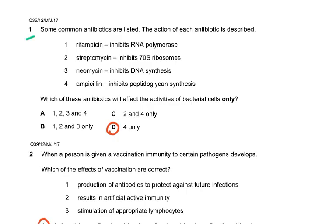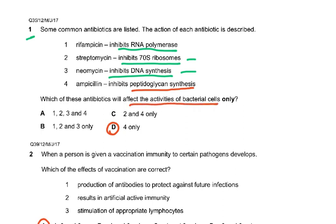Question one: some common antibiotics are listed and the action of each antibiotic is described. Rifampicin inhibits RNA polymerase. We would also have 70S ribosomes in our mitochondria. DNA synthesis occurs in the nucleus, but peptidoglycan is only in bacteria. So which of these antibiotics will affect the activities of bacterial cells only? The answer was four, and that is D.